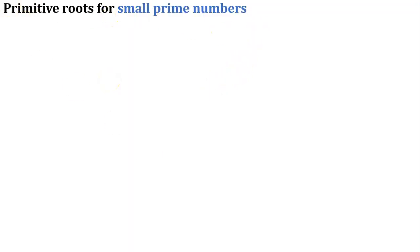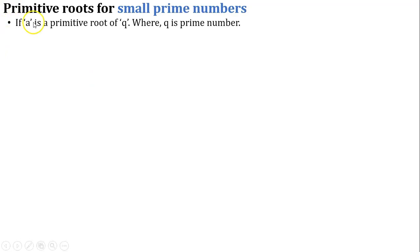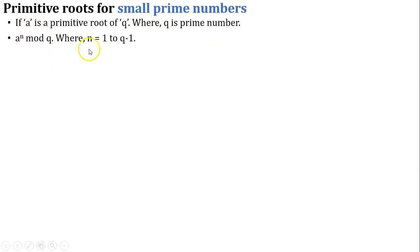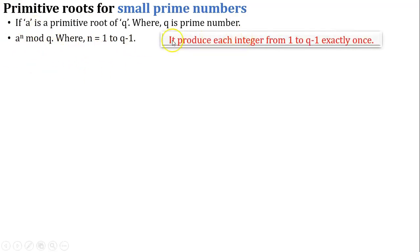To find the primitive roots for small prime numbers, we consider two points. The first point is: if a is a primitive root of q, where q is a prime number. The second point is: a raised to n mod q, where n equals 1 to q-1. Our condition is that this equation produces each integer from 1 to q-1 exactly once.